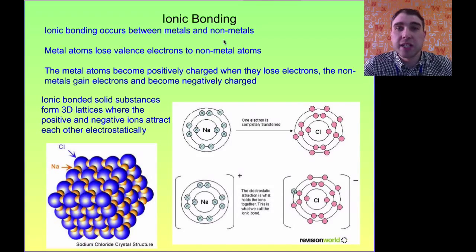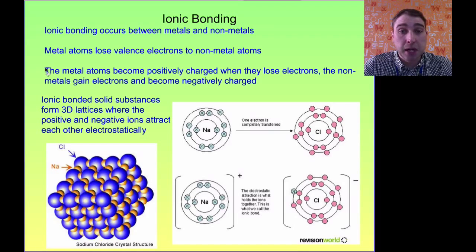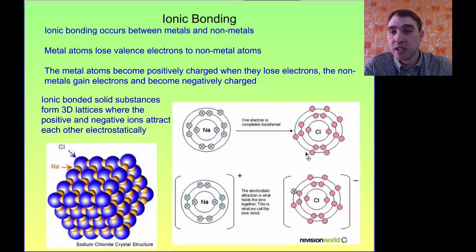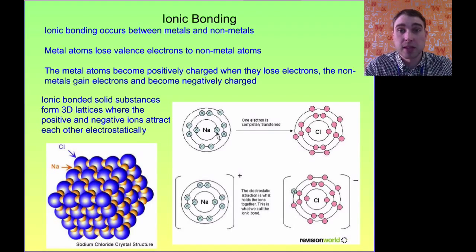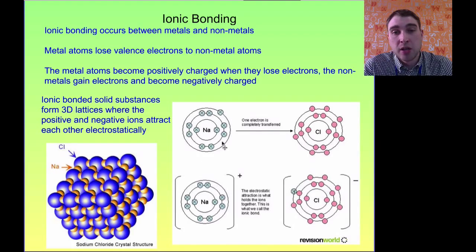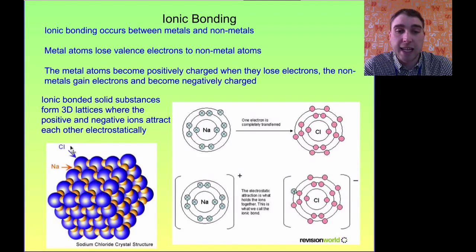Ionic bonding occurs between metals and non-metals. The metals lose electrons to the non-metal atoms, giving them a charge, and the non-metal atoms get an opposite charge — so they stick together. For example, sodium is in group 1 with one electron in its outermost shell, and chlorine is in group 7 with seven electrons. The electron travels from the sodium to the chlorine, making it a chloride ion with a negative charge. Because the sodium has lost an electron, it gets a positive charge. You have something positive next to something negative, so they stick together through electrostatic attraction, forming a big 3D lattice.